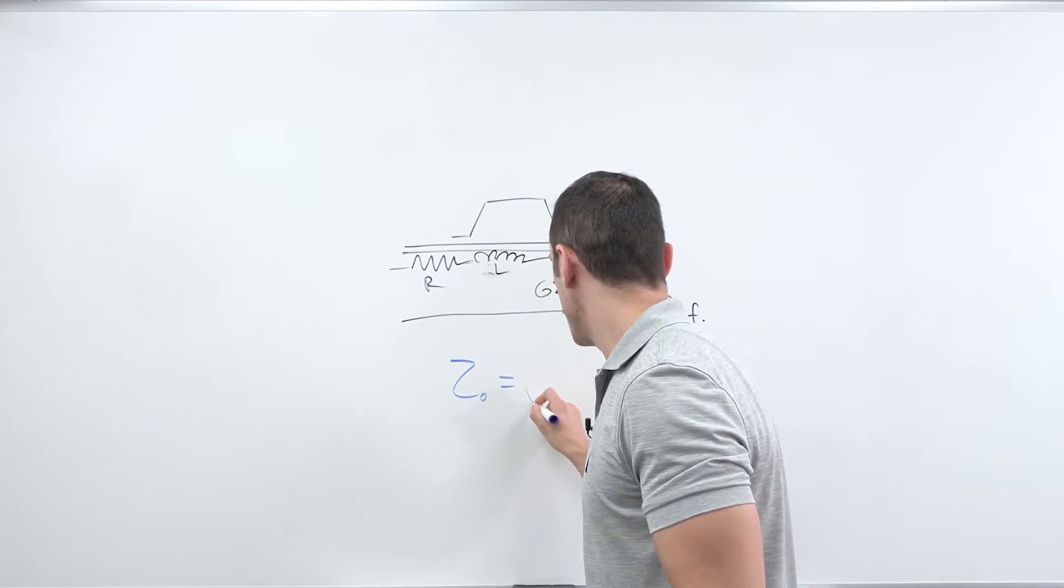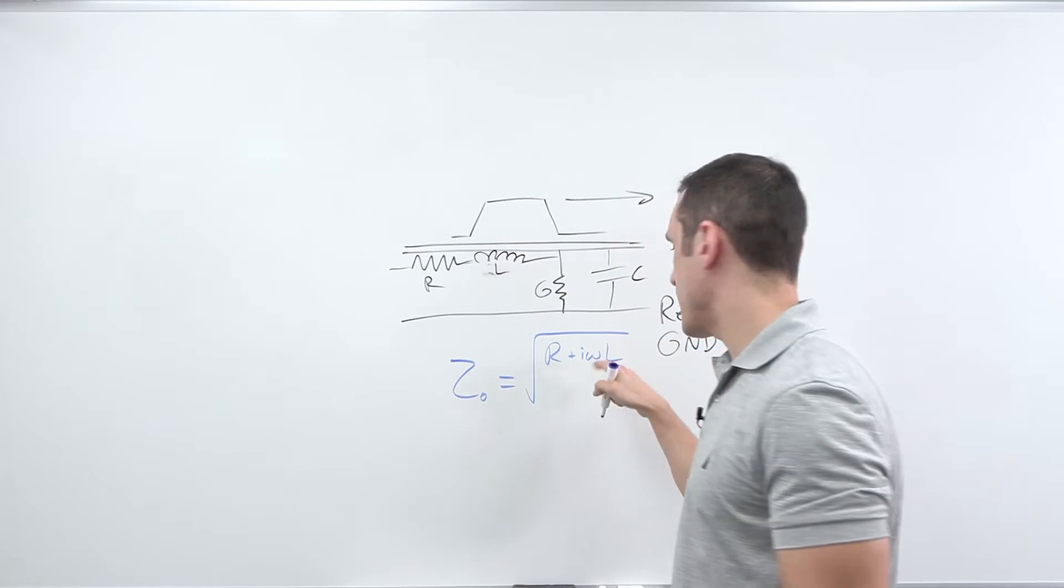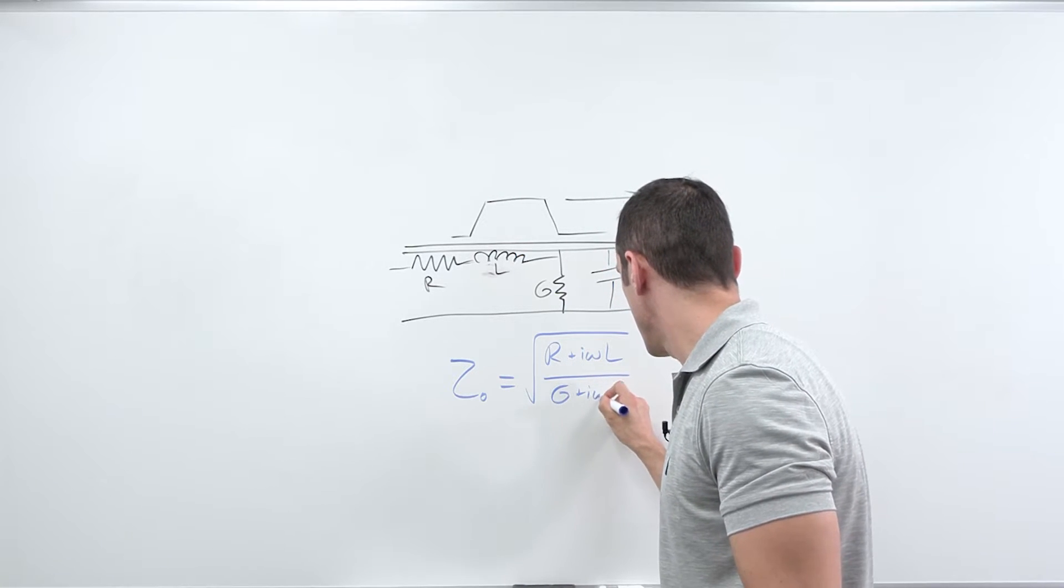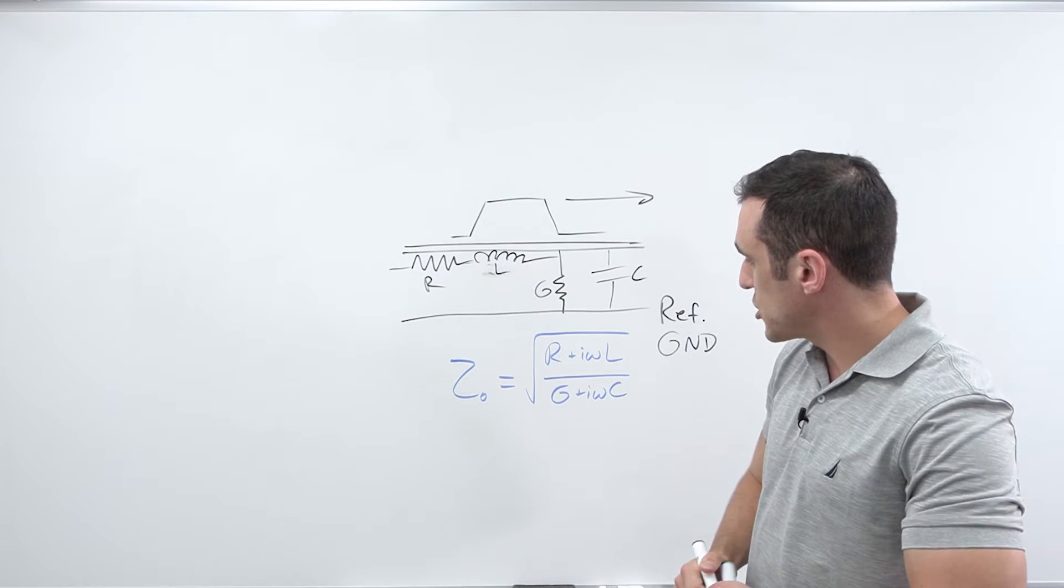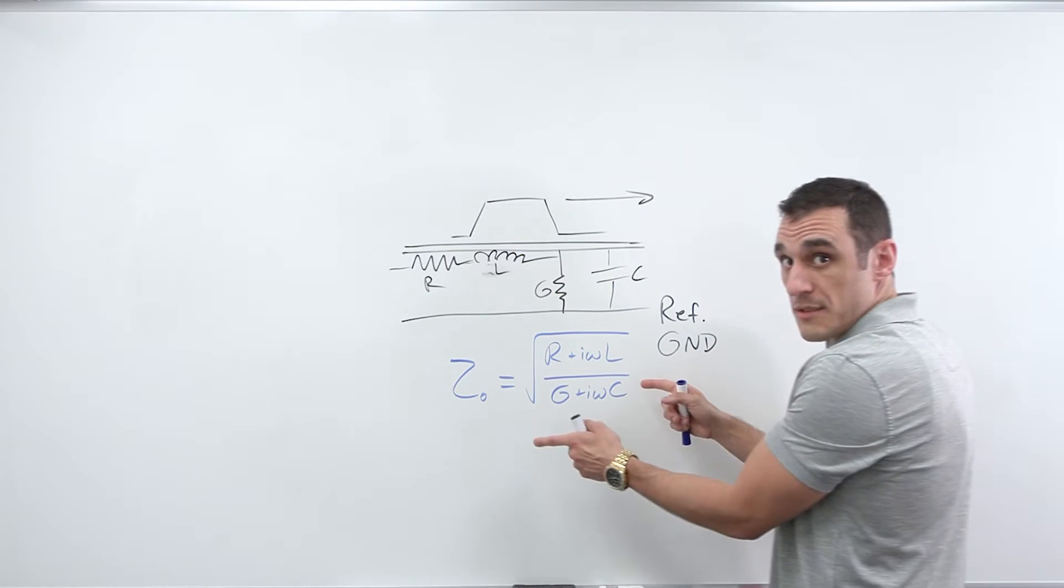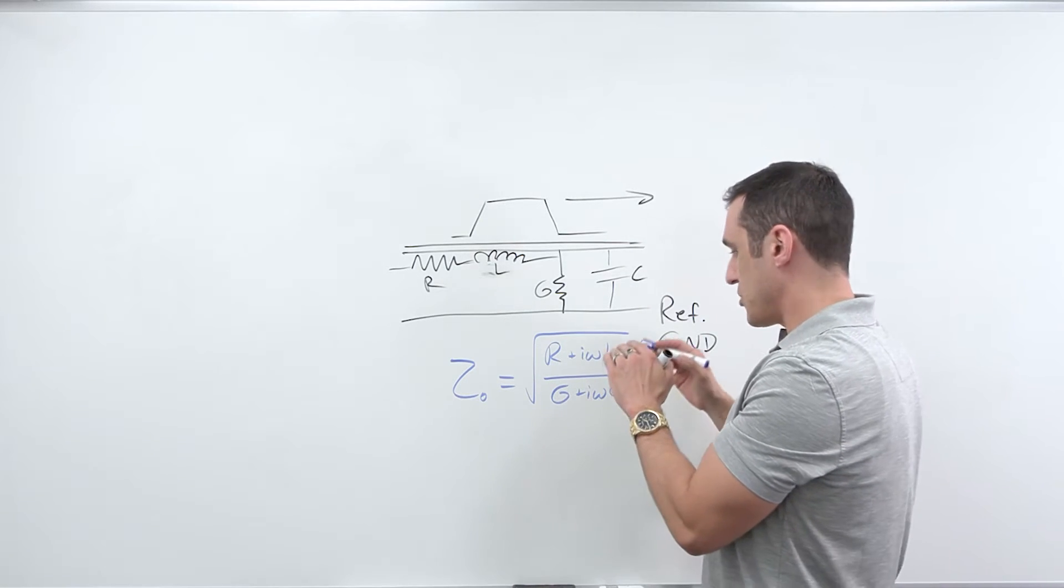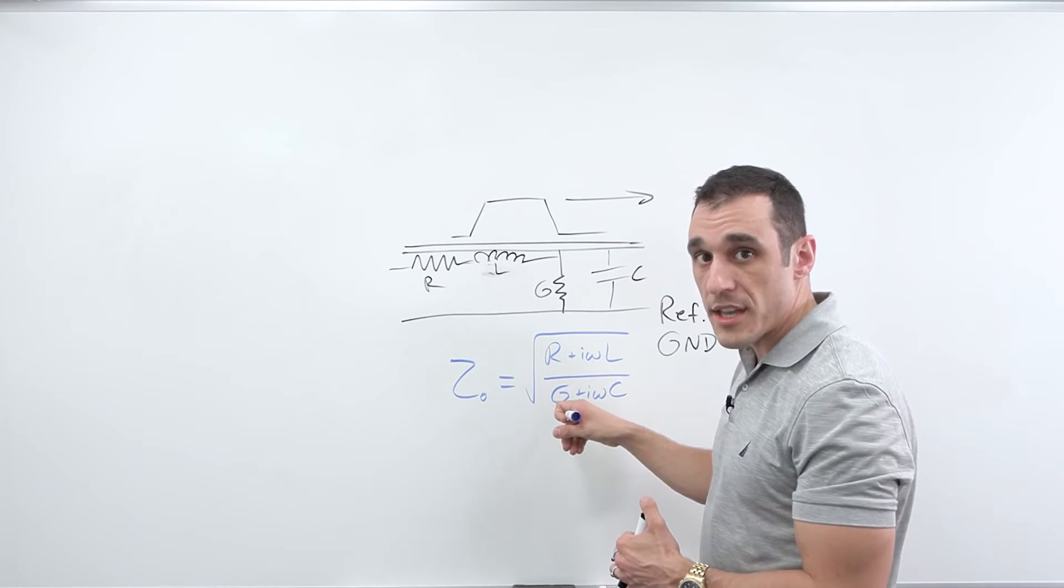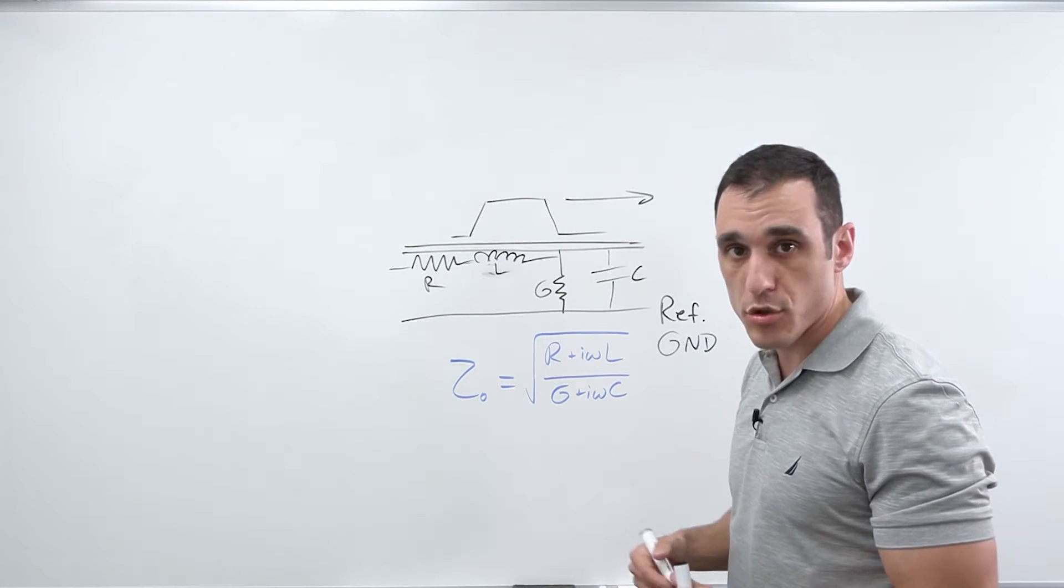It is just Z sub zero equals square root of R plus I omega L. So the omega is the angular frequency and then G plus I omega C. And so if you look at a previous video on transmission lines and the characteristic impedance of transmission lines, I actually go a bit deeper into what all of these terms mean. And you can actually find some more specific formulas in that video that describe what the G term is and some of the effects that happen in real transmission lines and how these terms contribute to loss.